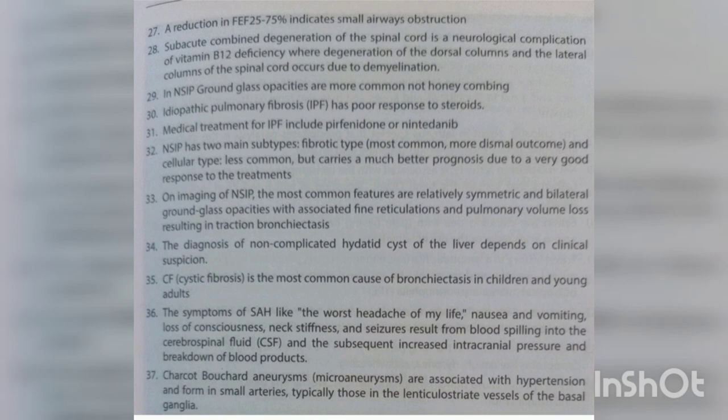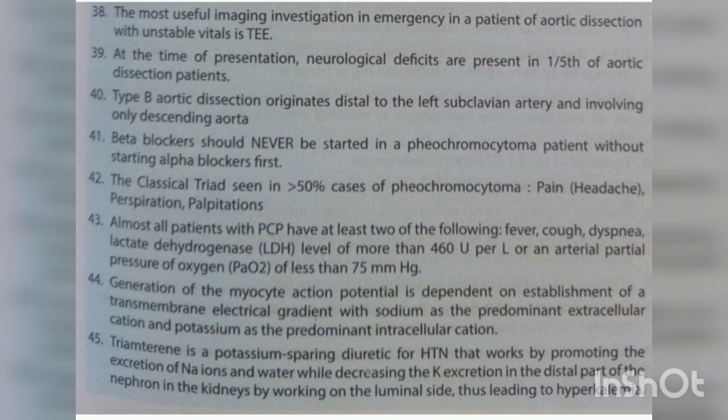The most useful imaging investigation in an emergency patient with aortic dissection and unstable vitals is transesophageal echocardiography (TEE). At presentation, neurological deficits are present in one-fifth of aortic dissection patients. Type B aortic dissection originates distal to the left subclavian artery, involving only the descending aorta. Beta blockers should never be started in a pheochromocytoma patient without starting alpha blockers first.